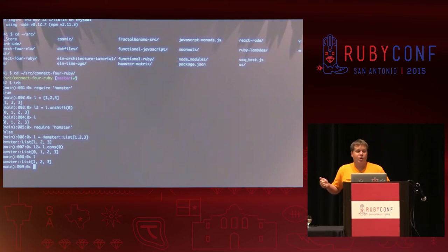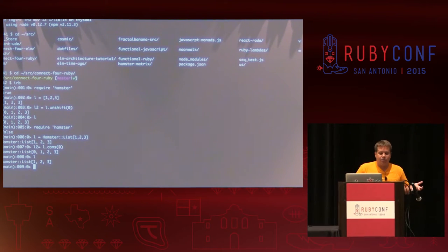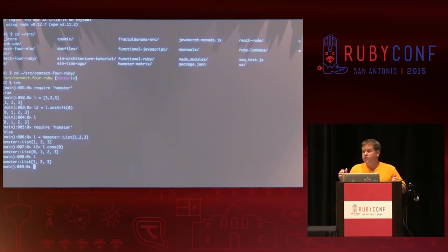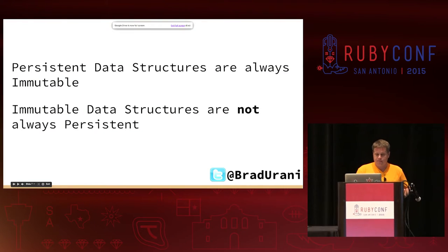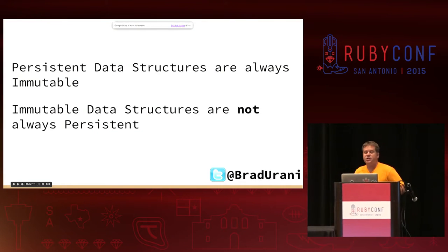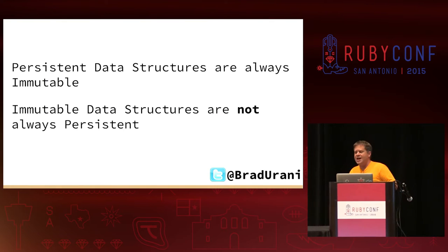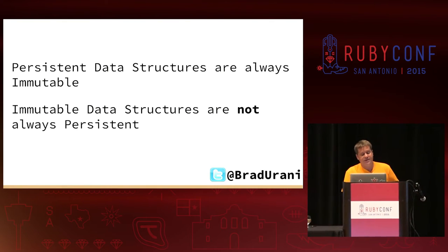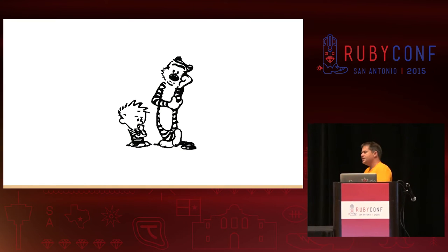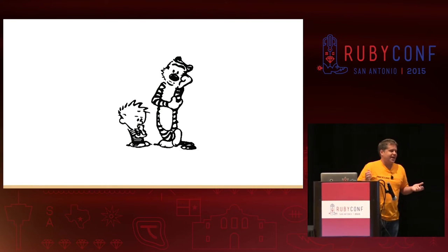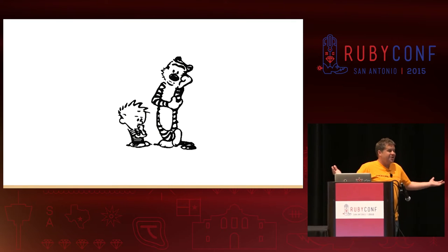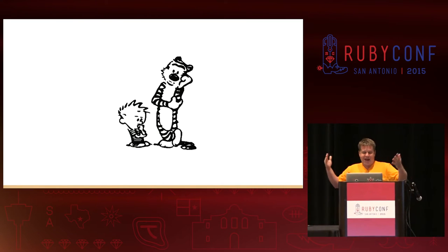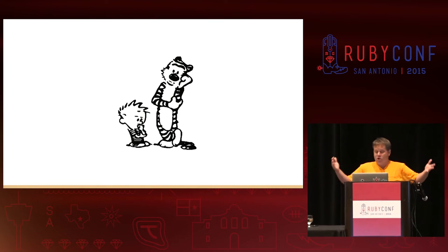So a persistent data structure is immutable, but immutable data structures are not necessarily persistent. Persistent data structures have these special qualities. How do they implement that? Say you wanted to make that Hamster list class yourself. The first thing we can think of is: when I update the list, I could just clone it — make a whole copy in memory, and then I would achieve what I wanted. Interesting example from everyone's favorite language, PHP: PHP actually does this. It's called copy on write. The PHP runtime clones things under the hood for you. But that's not very efficient — you wouldn't expect that to be very performant.